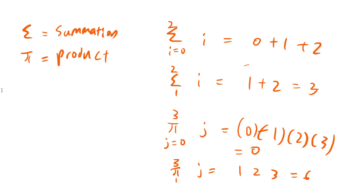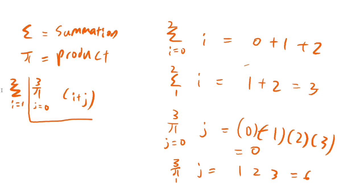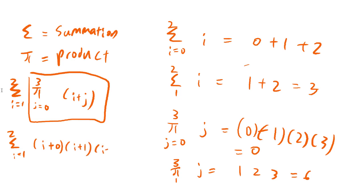Now I'm going to show you a combination of formulas. For example, the summation of i from 1 to 2 of the product notation of j from 0 to 3 of (i plus j). To solve this, you solve the innermost part first, so the answer becomes the summation of i from 1 to 2 of: (i plus 0) times (i plus 1) times (i plus 2) times (i plus 3).